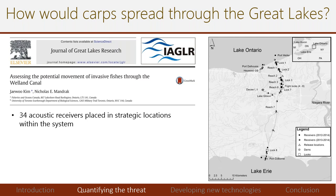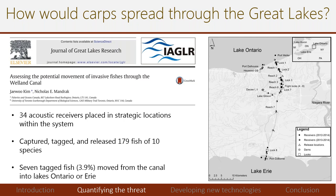A second study by Kim and Mandrak examined the Welland Canal, which separates Lake Erie from Lake Ontario. Using a telemetry system, they placed fish at different points inside the canal to see if they could reach the lakes. They released 179 fish of ten species in a multi-year study. Seven tagged fish, if released inside the canal, could move into Lakes Ontario or Erie. While this doesn't show cross-lake movement, it's still troubling that even a low percentage of fish can move through these locks.